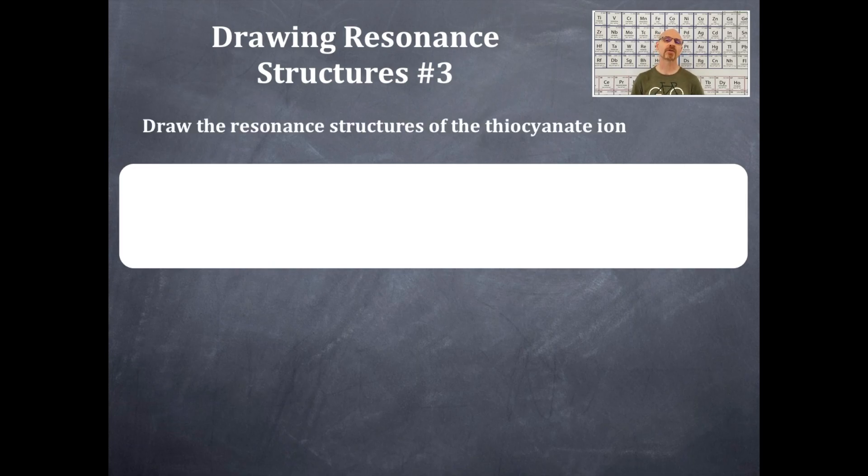We're going to draw the resonance structure for the thiocyanate ion. This is a polyatomic ion, one of those that you have to memorize. Hopefully you have memorized this. That is SCN minus one. You're going to look on your periodic table and count up the number of valence electrons in sulfur, in carbon, and in nitrogen, and then add one with that negative one charge.